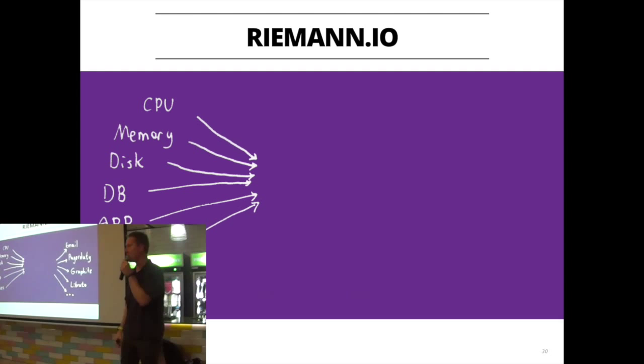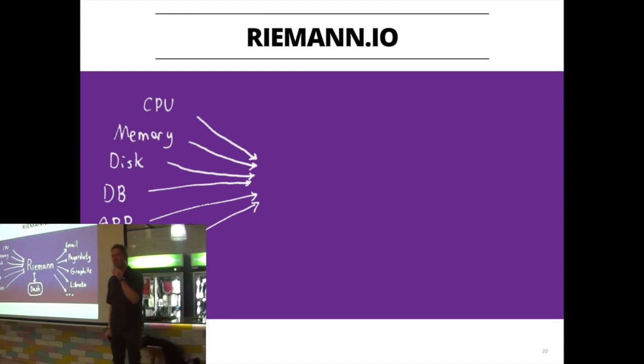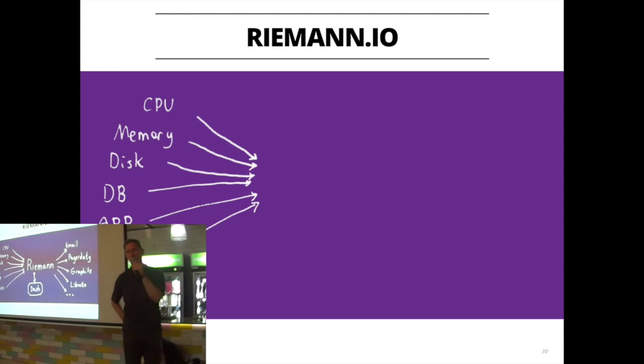What Riemann doesn't do well — and the author happily acknowledges this — is visualisation. It does have a dashboard we'll look at tonight, but it's not its raison d'être and it's not built to be something like Graphite. Riemann is written by Kyle Kingsbury, who is perhaps better known for debunking NoSQL database vendors' claims that their systems actually provide parts of the CAP theorem when they have network problems — spending a lot of time disproving claims around Cassandra and possibly MongoDB as well.